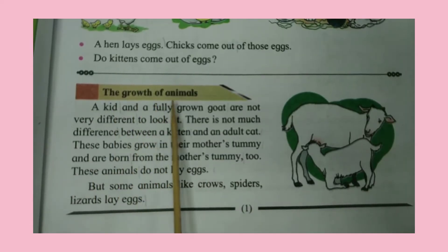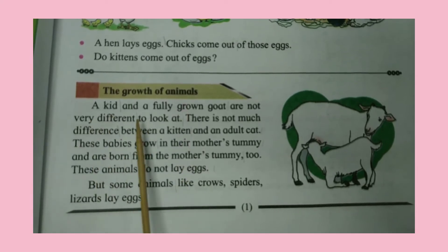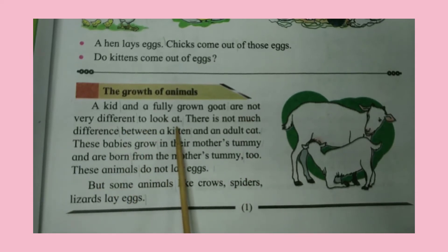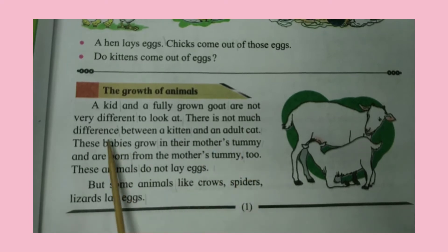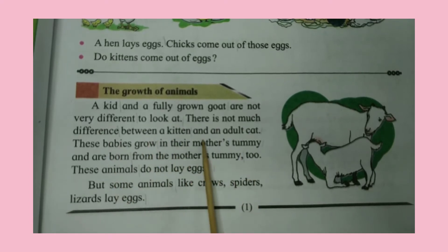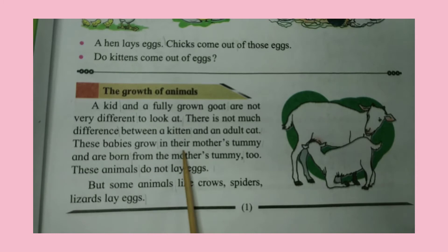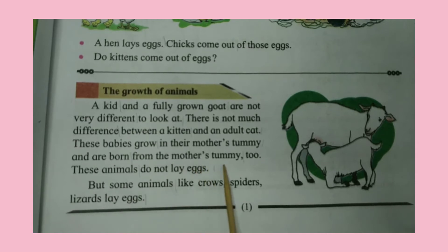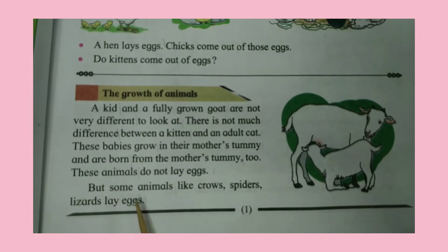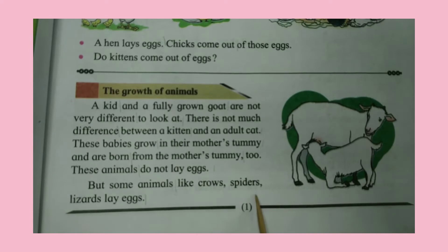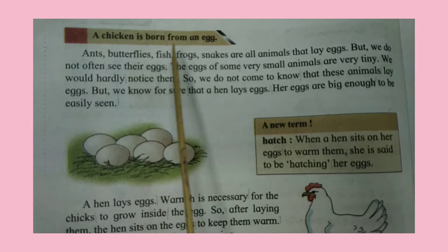The Growth of Animals. A kid and a fully grown goat are not very different to look at. There is not much difference between a kitten and an adult cat. These babies grow in their mother's tummy and are born from the mother's tummy too. These animals do not lay eggs. But some animals like crows, spiders, and lizards lay eggs. A chicken is born from an egg.